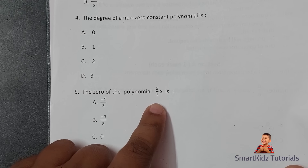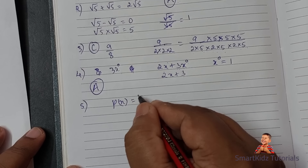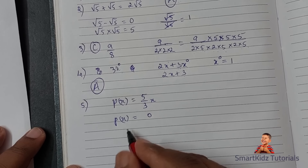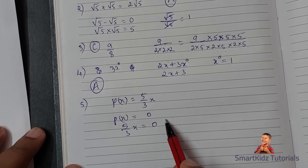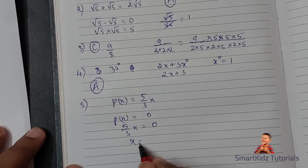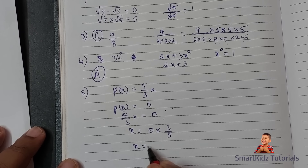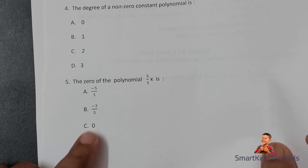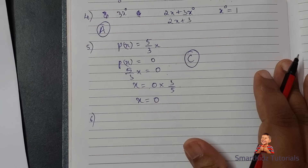Question 5: The zero of the polynomial 5/3·x is what? If p(x) = 5/3·x, we set the polynomial equal to 0: 5/3·x = 0. Taking 5/3 to the other side, x = 0 × 3/5 = 0. So the zero of this polynomial is 0. C is the correct choice.